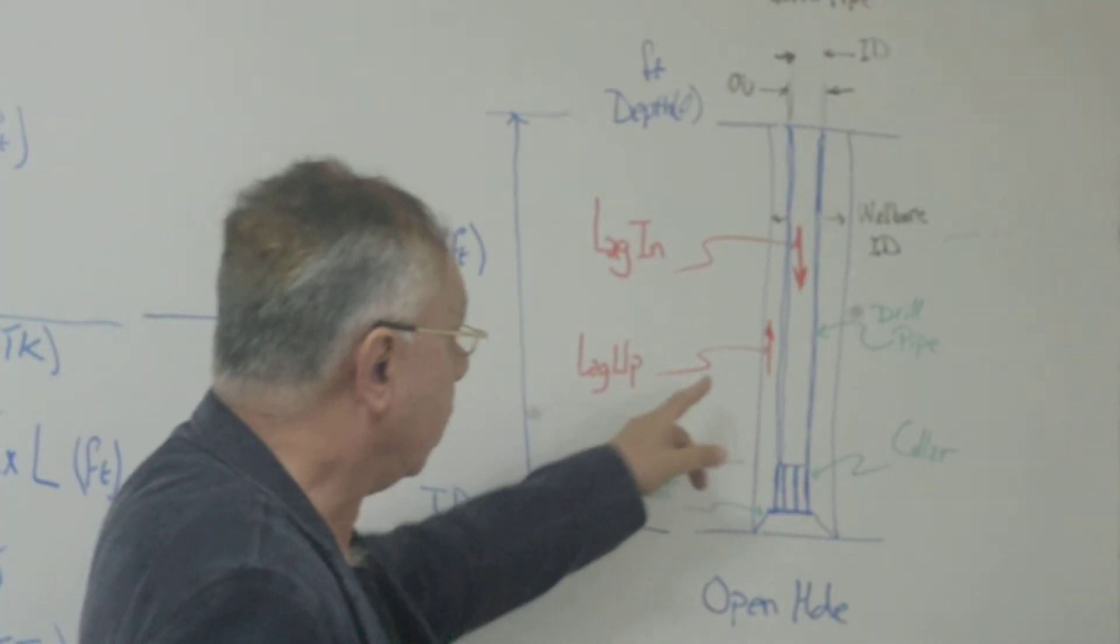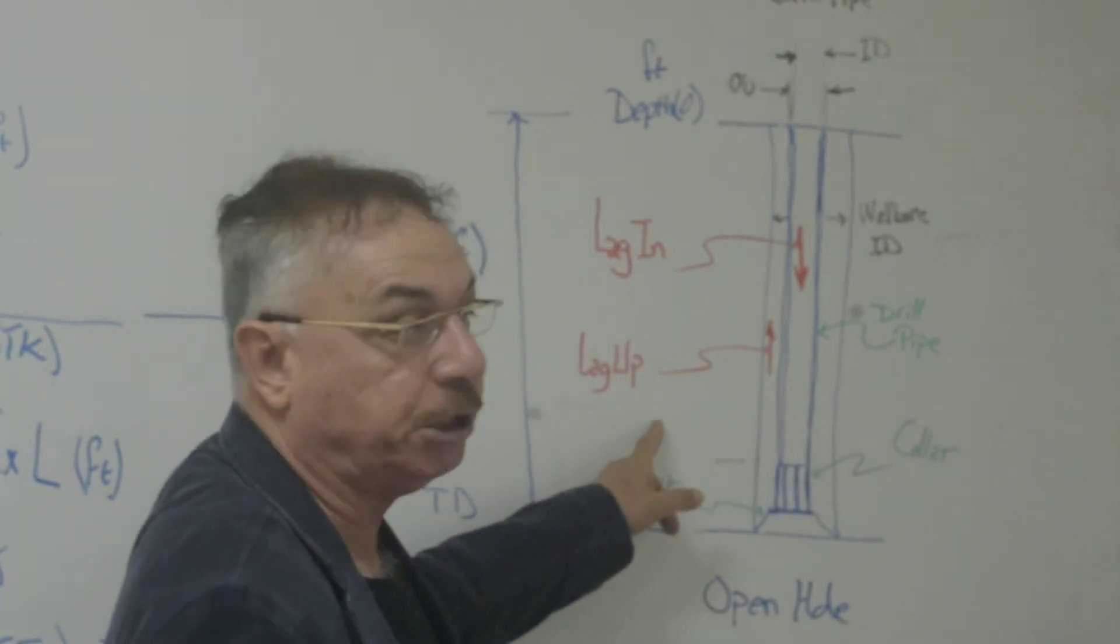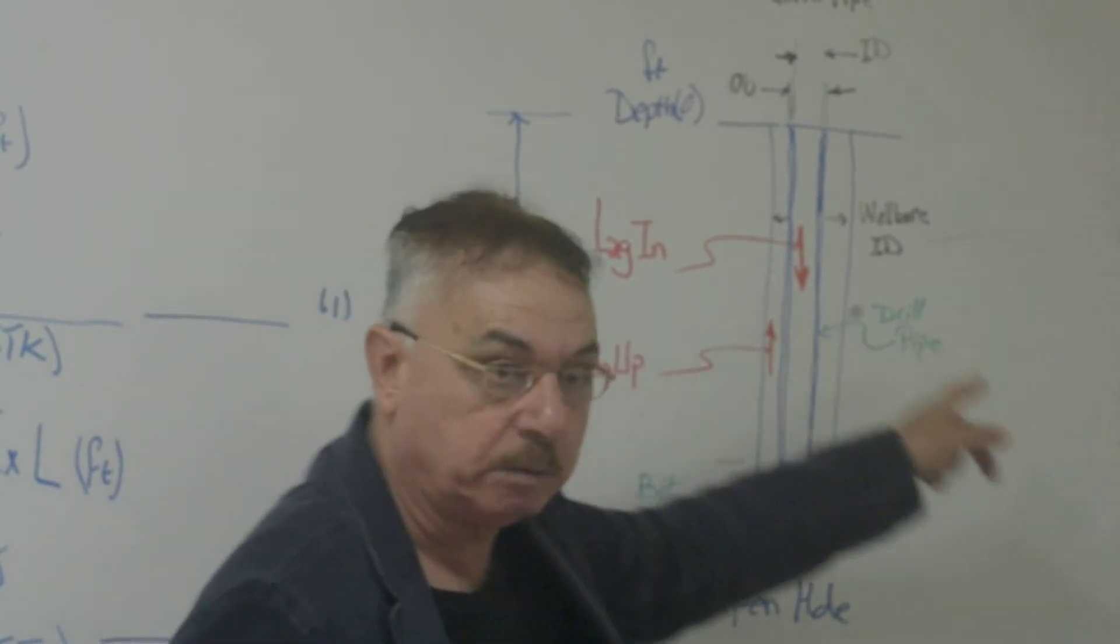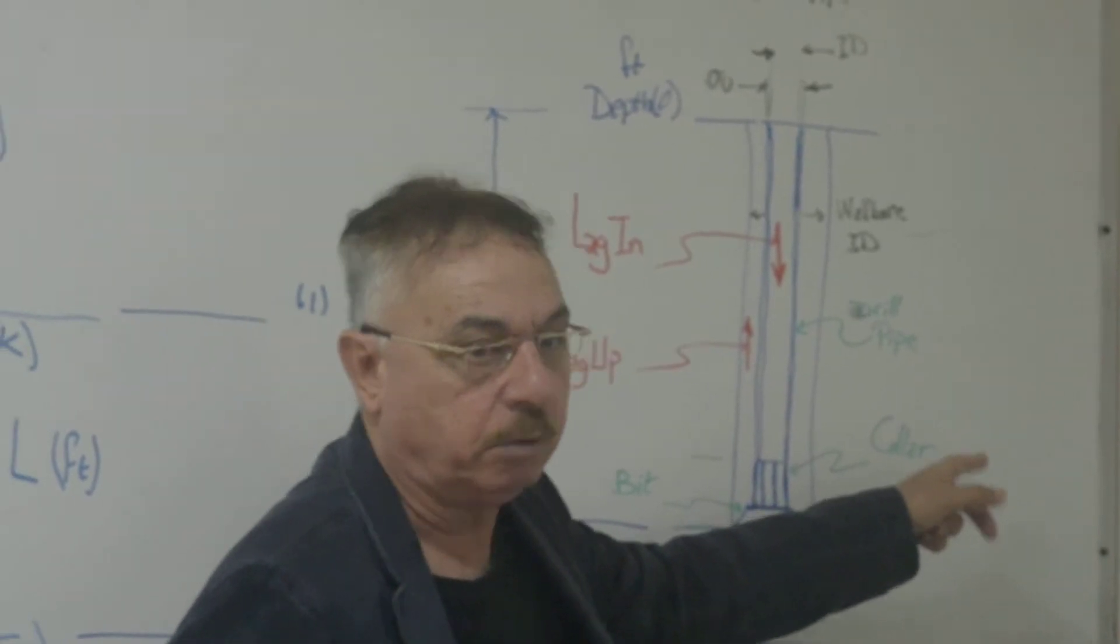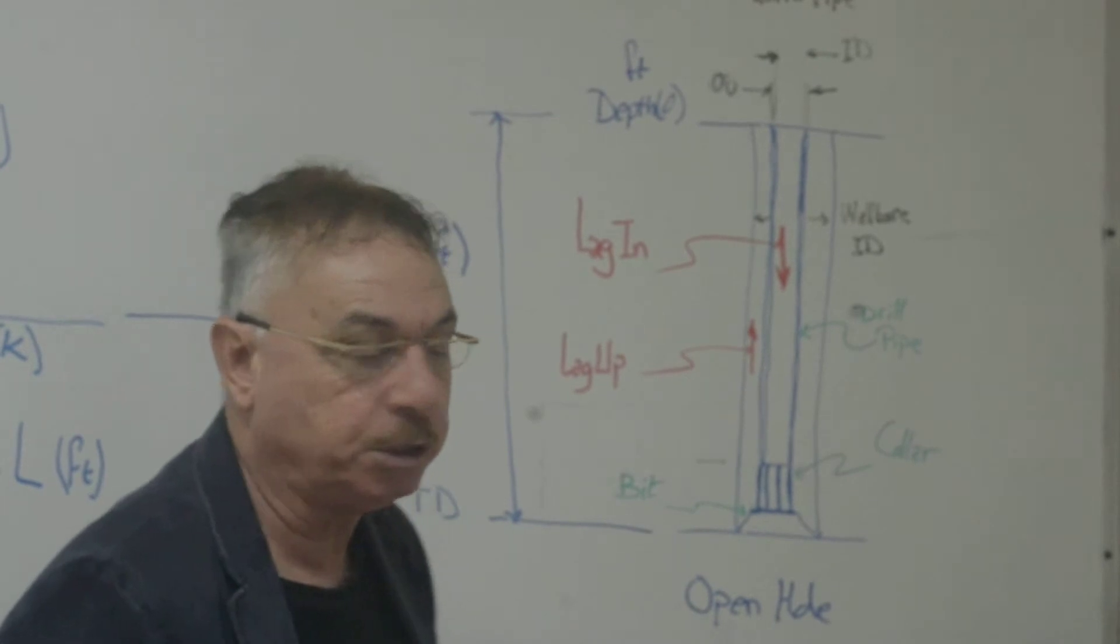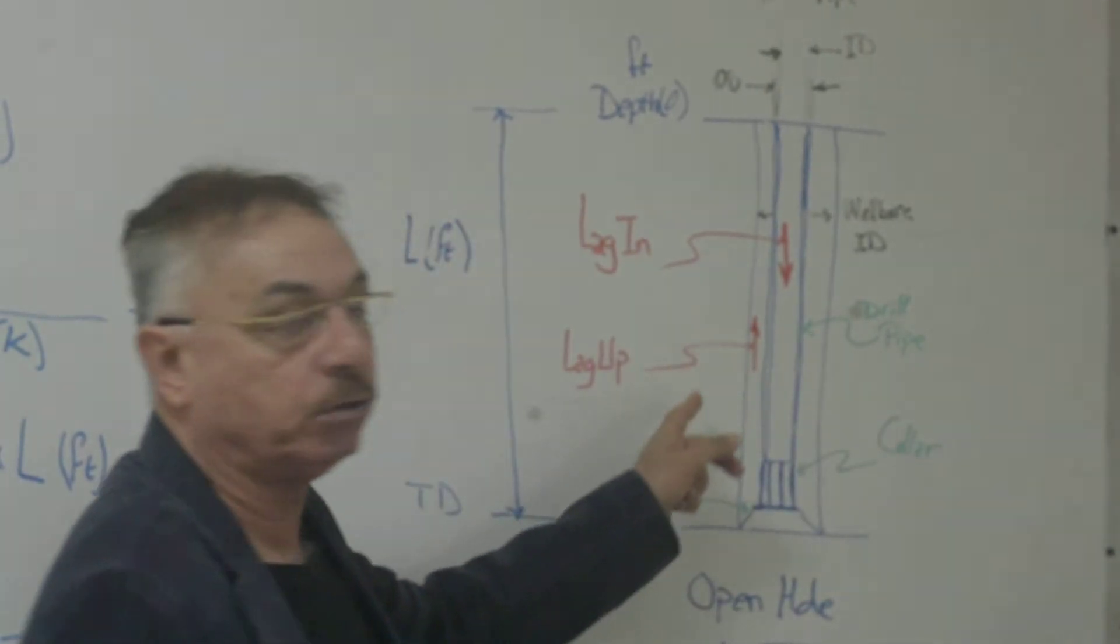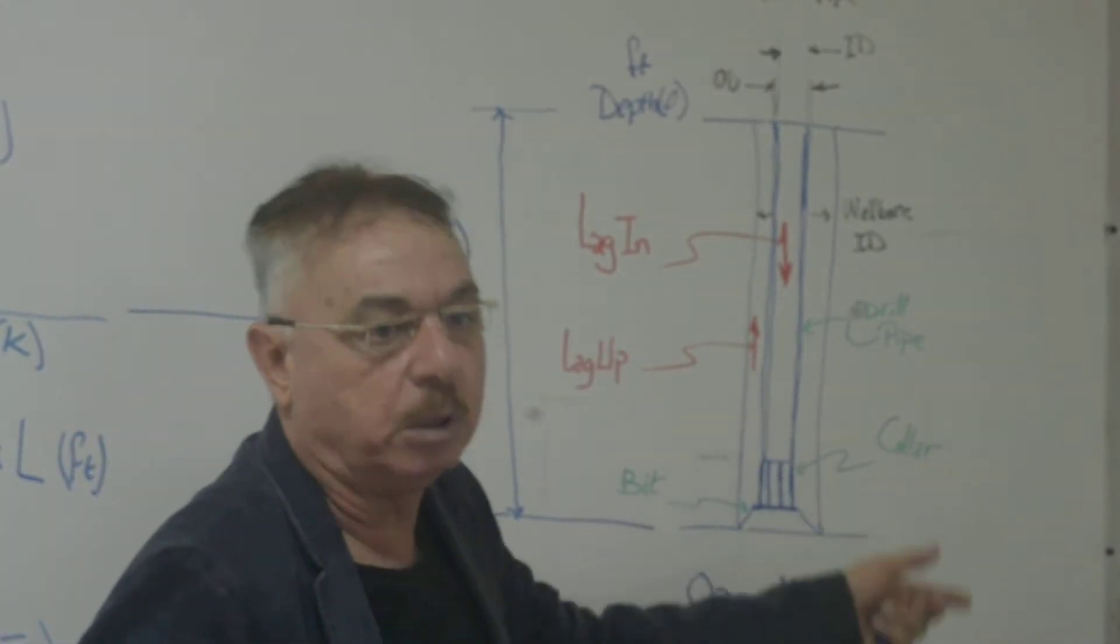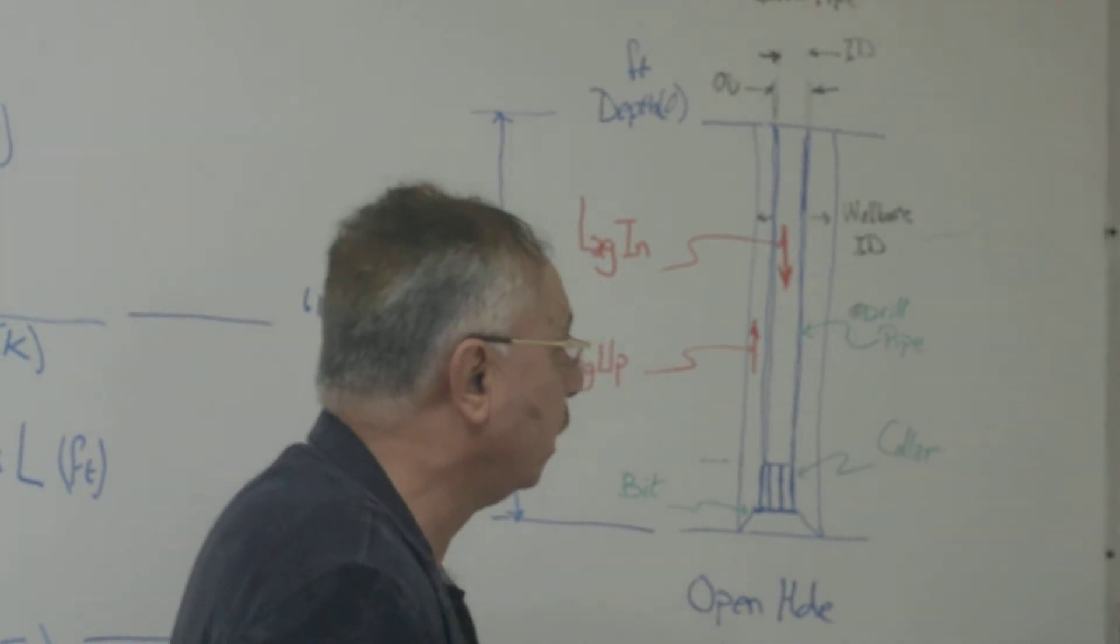With lag up, you have communication between the mud and the formation. So either the mud can get into that formation, which is called loss of circulation, or the formation fluids get into the mud. And this is a kick or a blowout.